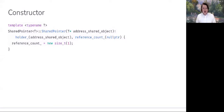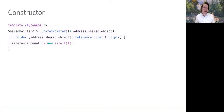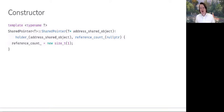Let's look at our constructor. Our parameterized constructor takes the address of the object we'd like to transfer ownership of to our shared pointer. We initialize holder with that address and reference_count to nullptr. Then within the body of the function, we allocate the dynamically allocated object of type size_t: reference_count = new size_t(1), because at this point there is one shared pointer object engaged in shared ownership of the object pointed to by holder.